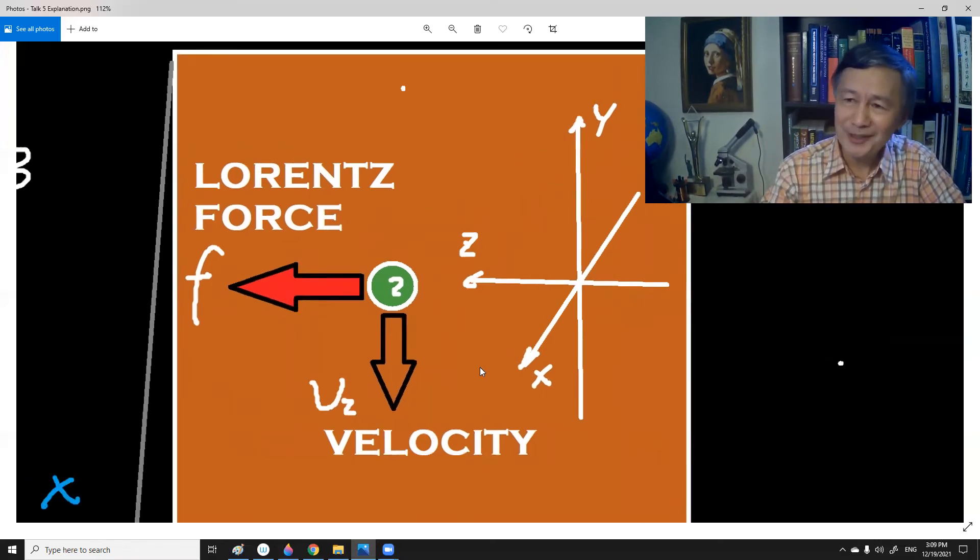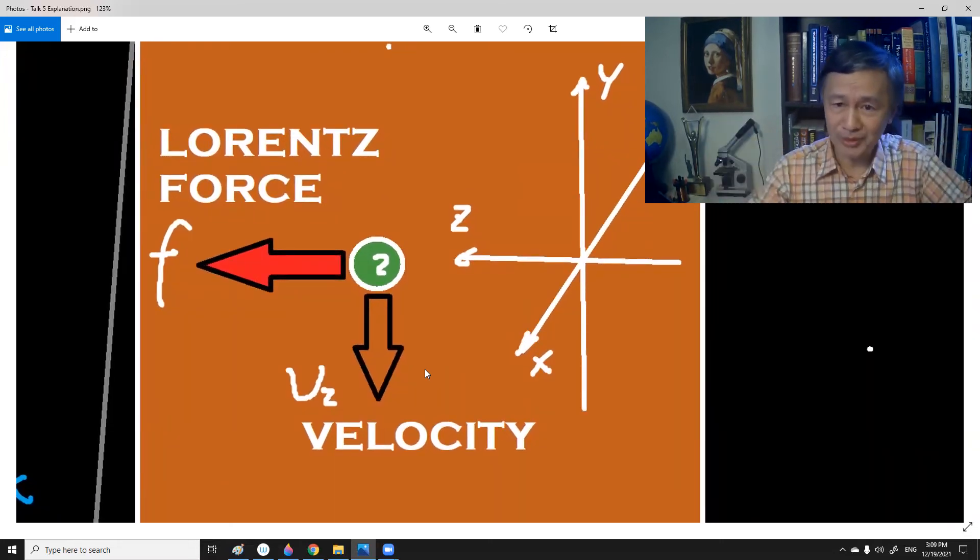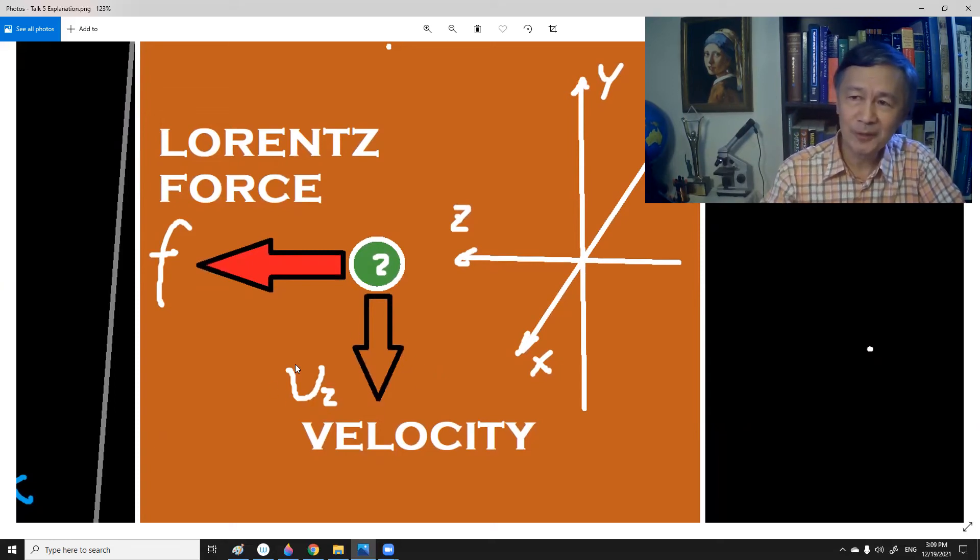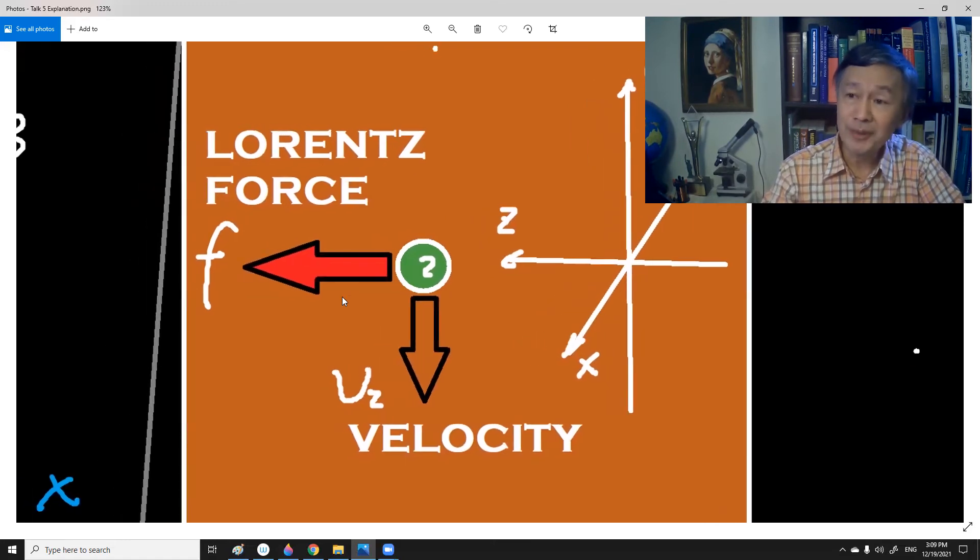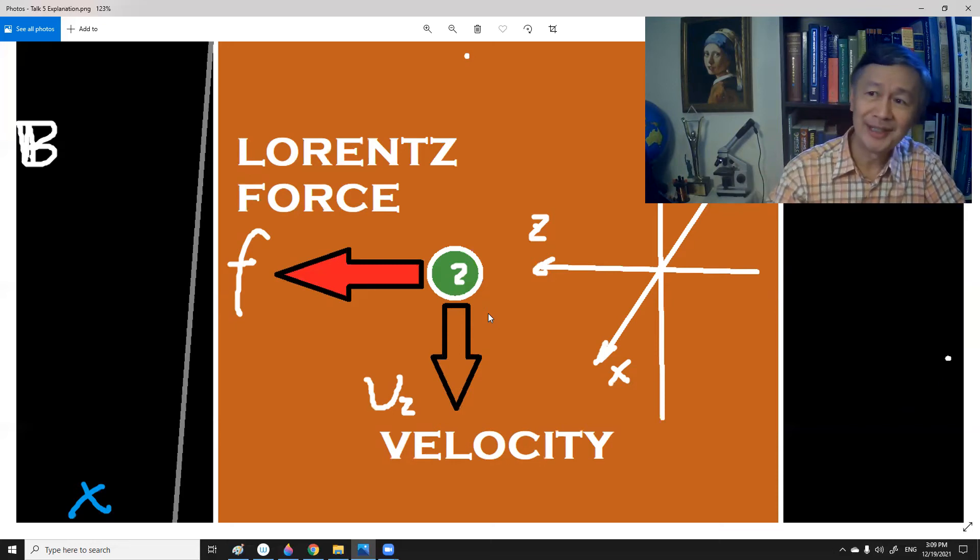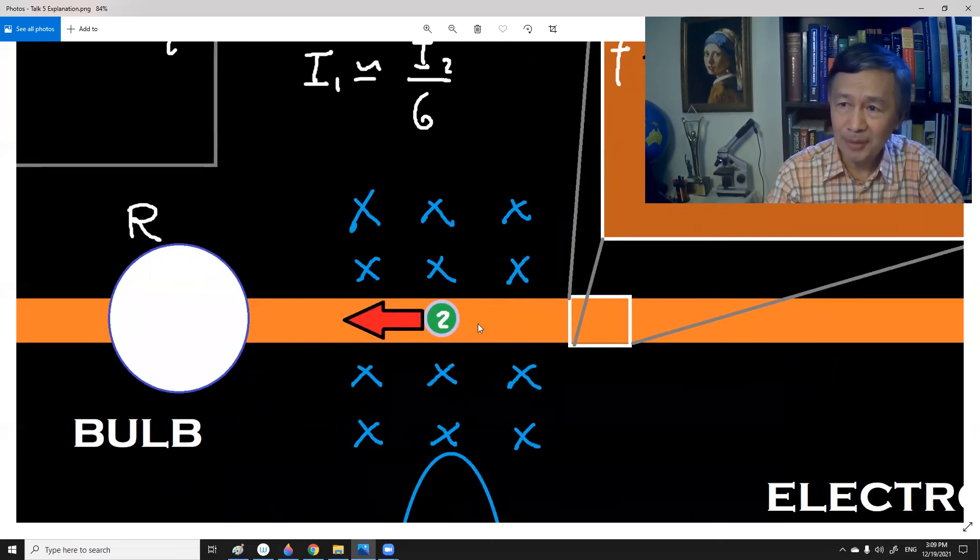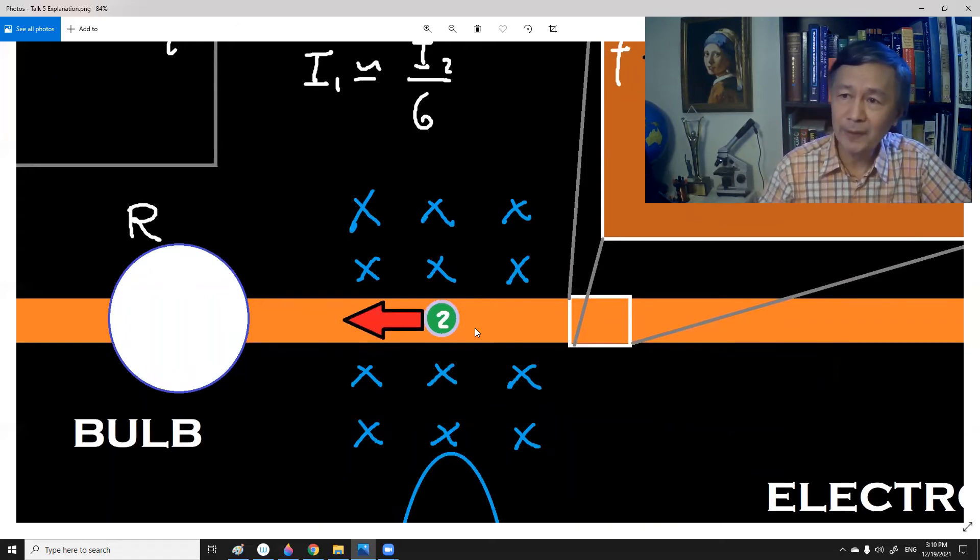If we simply assume that those electrons at that moment are moving downward, what would be the direction of the force? I'm sure you can work out if you have studied high school physics. This red arrow will represent exactly the Lorentz force acting on the electron. As a result, the electron will be accelerated towards the electric bulb. So that is why. This is a simple explanation of that observed current.